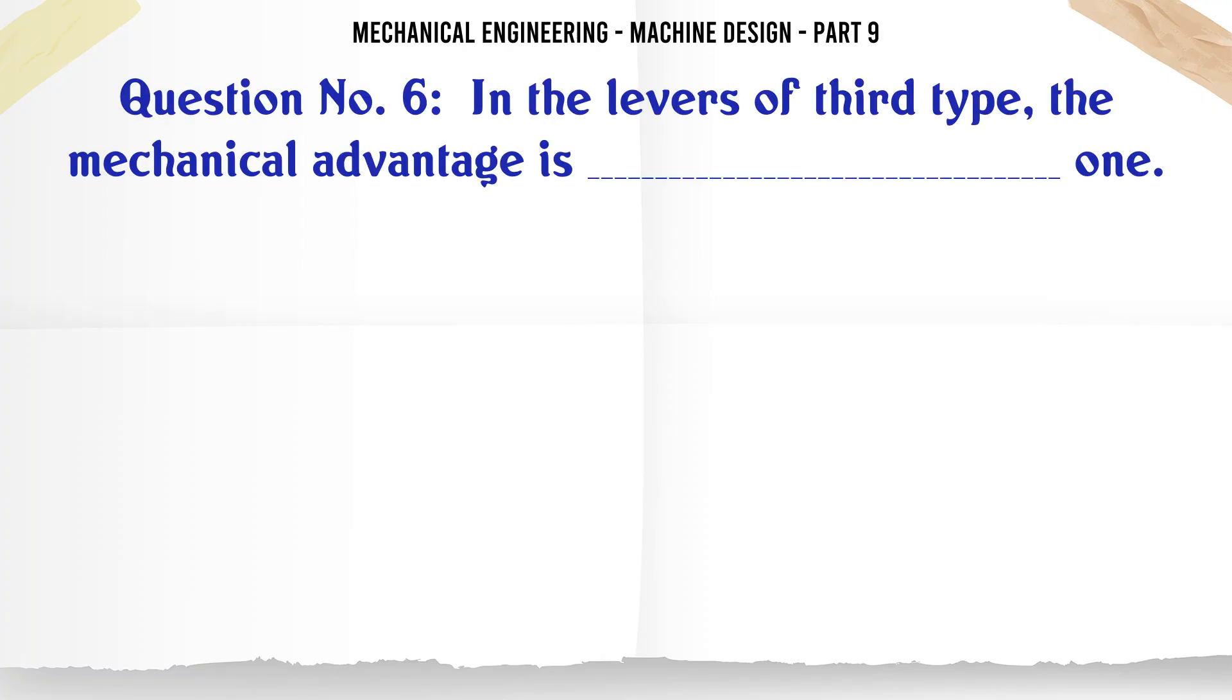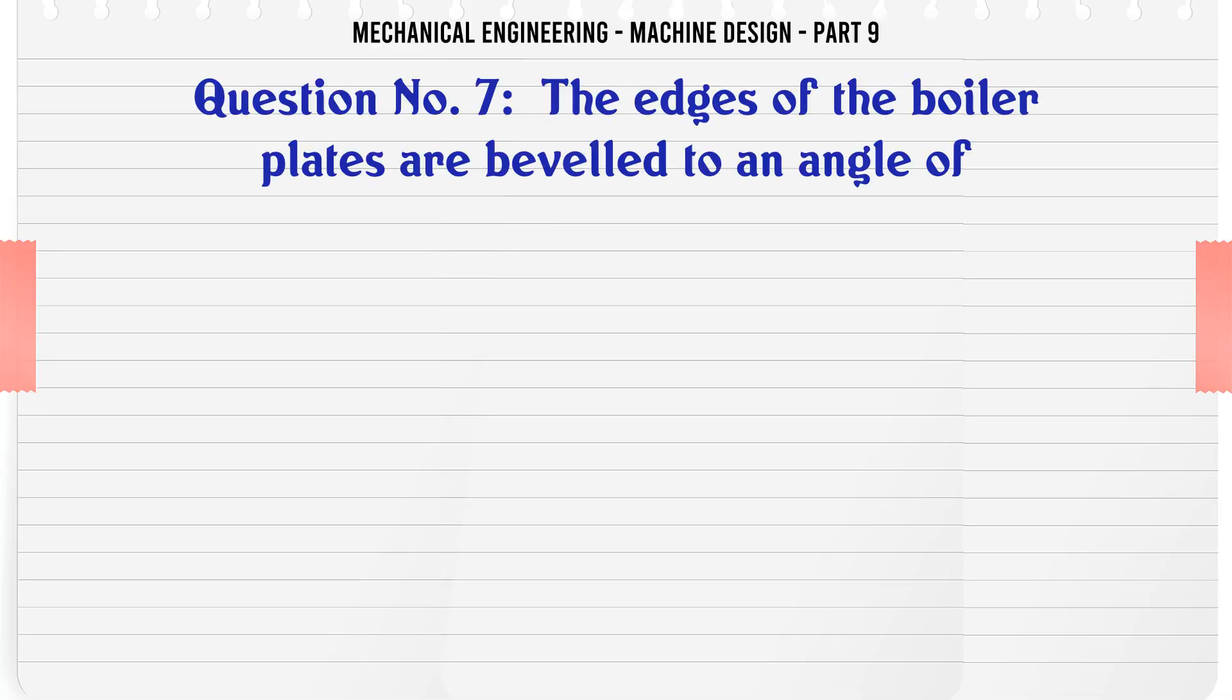In the levers of third type, the mechanical advantage is: A. Less than 1, B. Equal to 1, C. More than 1, D. The correct answer is Less than 1.